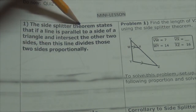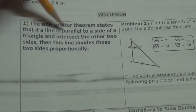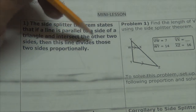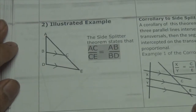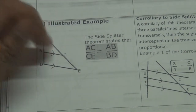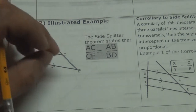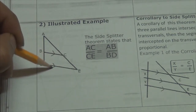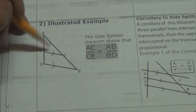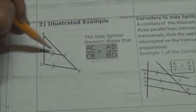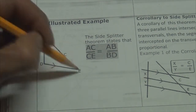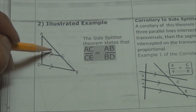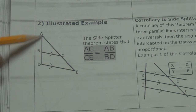The side splitter theorem states that if a line is parallel to a side of a triangle and intersects the other two sides, then this line divides those two sides proportionally. In other words, this is just one of the strategies, one of the variations — because there's another one I have to talk to you about later in this lesson. So if this line is parallel to this other line — that's how you denote parallelism — and this segment intersects the other two sides, not this one but this side and this side, then it divides the two sides proportionally.